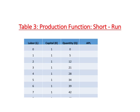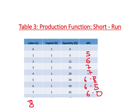Calculating average product of labor based on our numbers: for the first worker it is 5, for the second worker it is 6, for the third worker it is 7, for the fourth worker it is 7 again, for the fifth worker it is 6.8, for the sixth worker it is 6.5, for the seventh worker it is 6.0, and for the eighth worker these numbers are missing but we can figure out it will be 5 units. As we change the number of workers, average productivity per worker does not stay constant — it goes on changing.